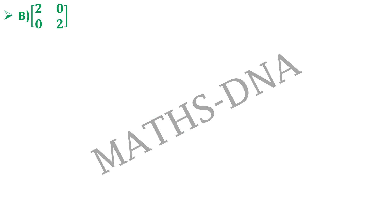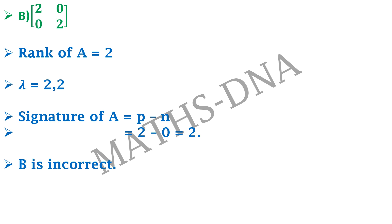Moving on to option B. Here once again rank is 2 but the eigenvalues are 2 comma 2 that is both the eigenvalues are positive. So the signature of the matrix will be 2 minus 0 and that will be equals to 2. So B is not correct because signature of B is not equal to the signature of our matrix.